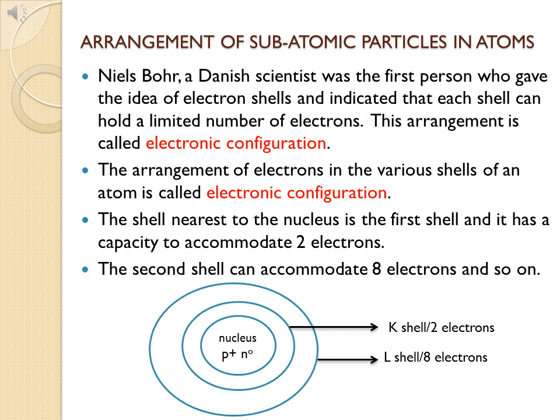Electrons are continuously revolving around the nucleus in these orbits. Now the big question is: how many electrons are to be present in these shells? How many electrons can be accommodated in a particular shell?